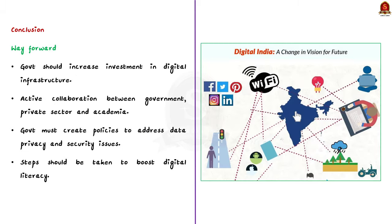In the conclusion, we suggest steps to improve the digitalization process. First, the government should increase investment in India's digital infrastructure. Second, there should be active collaboration between government, private sector, and academia in promoting digital services. Third, the government must create policies to address data privacy and other security issues. Finally, steps to boost digital literacy, especially in rural areas, through awareness campaigns. In summary, India's digital transformation has majorly contributed to its economic growth, but we must address digital illiteracy, infrastructure, and data privacy to ensure complete digitalization.